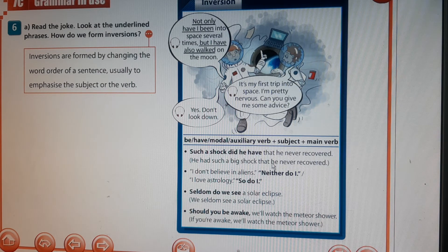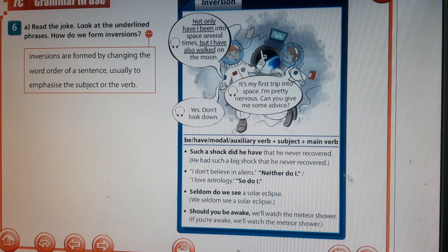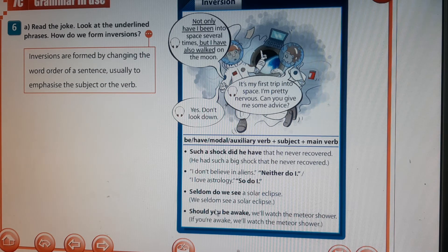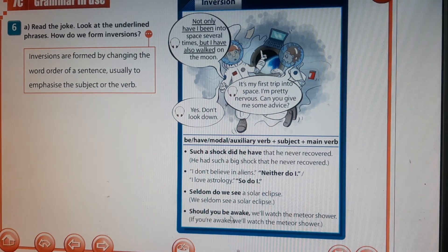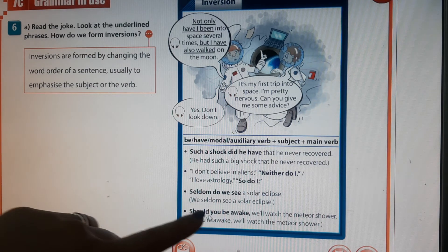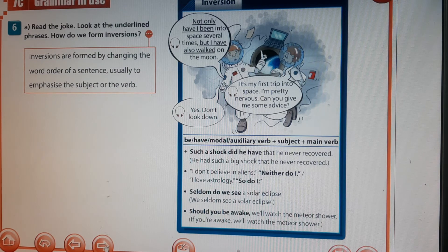'Such a shock did he have that he never recovered' — meaning he had such a big shock that he never recovered. 'I don't believe in aliens.' — 'Neither do I' to agree. 'I love astrology.' — 'So do I' — you could also say 'me too.' 'Seldom do we see a solar eclipse' — the standard word order would be 'we seldom see it' but inversion emphasizes it. 'Should you be awake, we will watch the meteor shower' — first conditional with inversion.